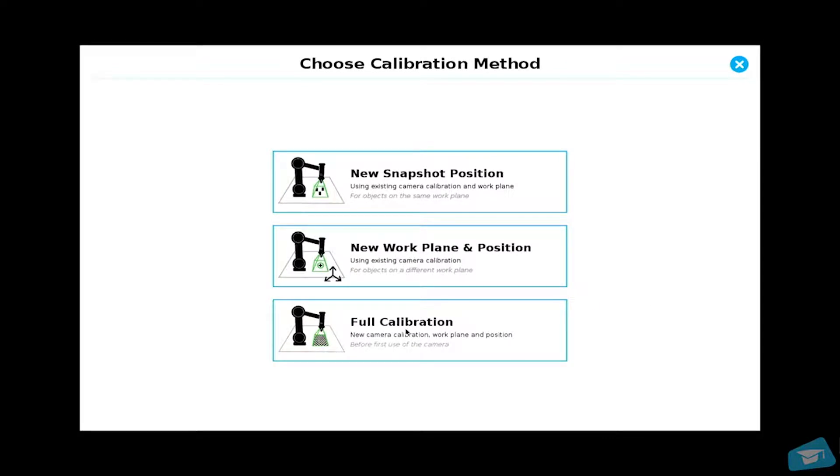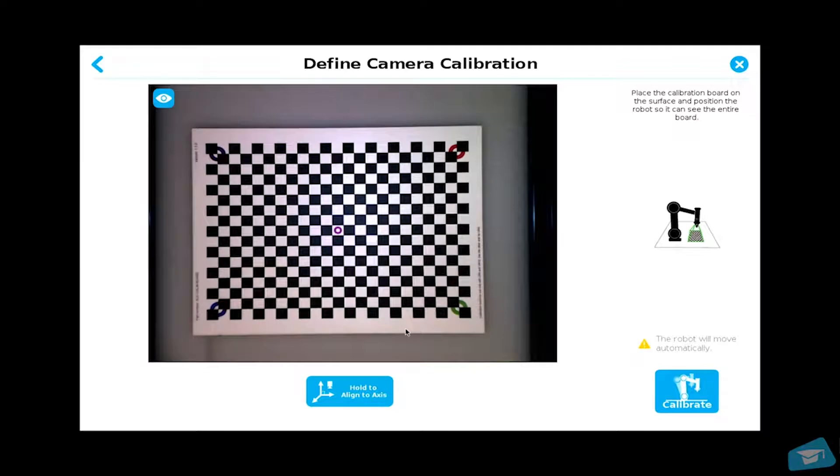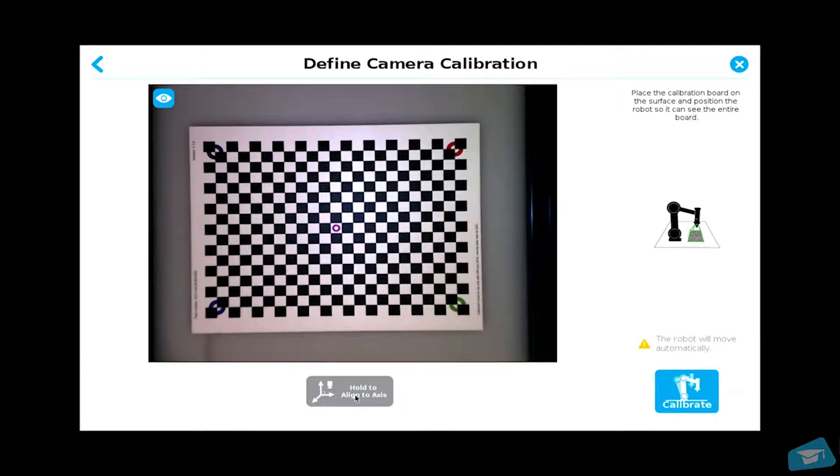Place the calibration board on the work plane. Move the robot to see the whole calibration board on the camera view. Click hold to align the camera with the work plane.